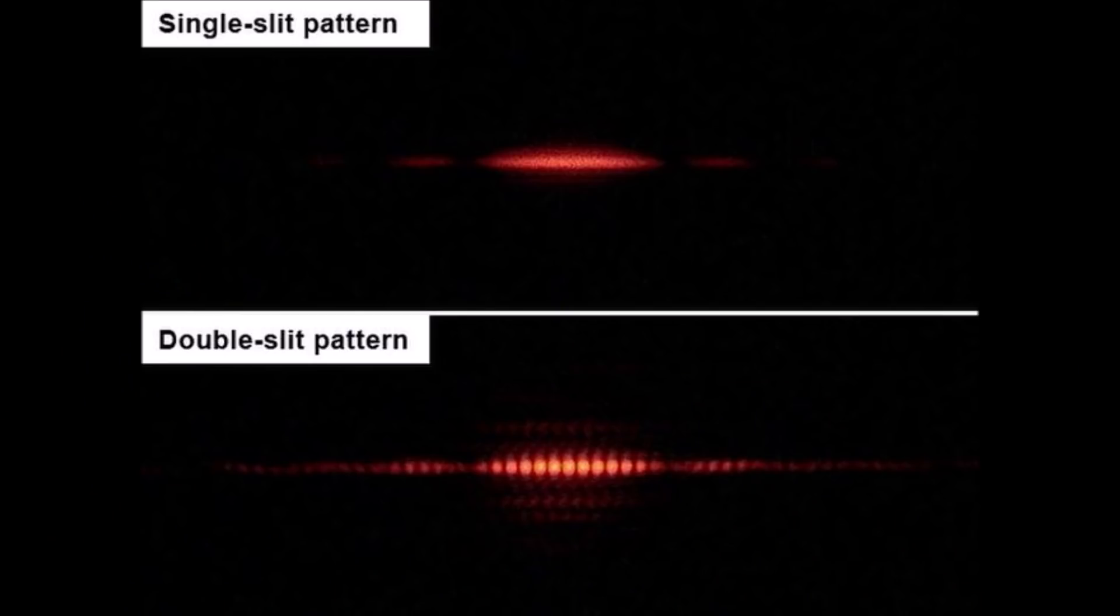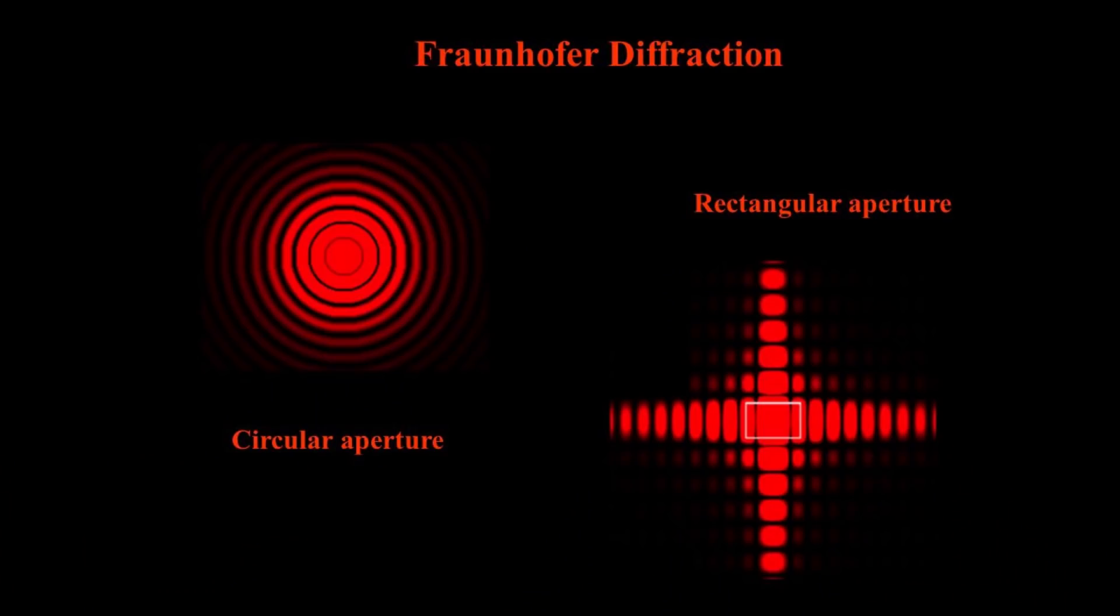Before we talk about the Rayleigh criterion, I want you to cast your mind back at school to times you might have done stuff like this. Now you'll have done that when you looked at diffraction, which this isn't a lesson on diffraction, but essentially it's when a wave spreads out after passing through a gap. You may have done it with light when you did Young's slits experiment and you may have seen a pattern like this. And you may recognize this picture as being the diffraction pattern that occurs when a wave travels through a circular opening or aperture.